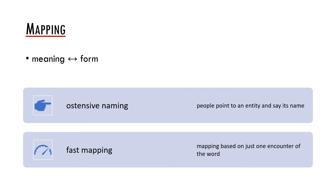The key term we will use here is mapping between meaning and form. In the input, the child hears the form of the word, but to acquire it, it needs to map this form to its correct meaning. This is not a straightforward thing, obviously.